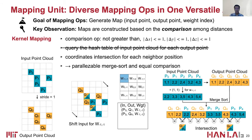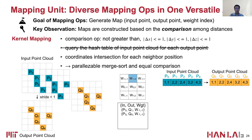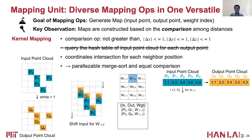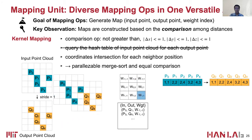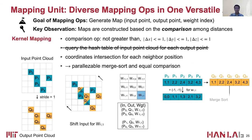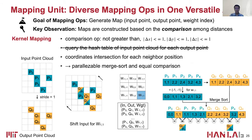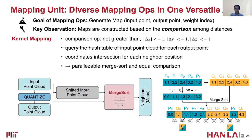Both merge-sort and equal comparison here can be easily parallelized. For the next weight, the process is the same. We shift the input point cloud to the bottom and detect the intersection between the output and shifted input point cloud by merge-sorting two clouds and comparing the adjacent elements. After we go through all neighbor positions, all the maps are found. Thus, we eventually convert the kernel mapping into parallelizable merge-sort comparison.